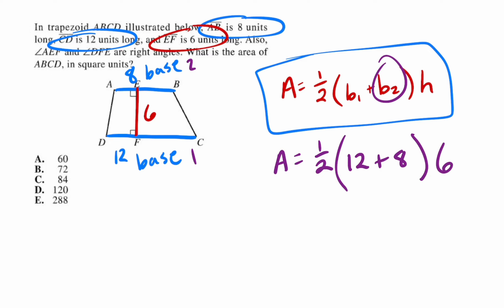Okay, so solving, you just follow your order of operations. Simplify the parentheses first - 12 plus 8 equals 20. Then bring the one half down and the six down. Next, multiply across - half of 20 is 10, and 10 times 6 is 60.